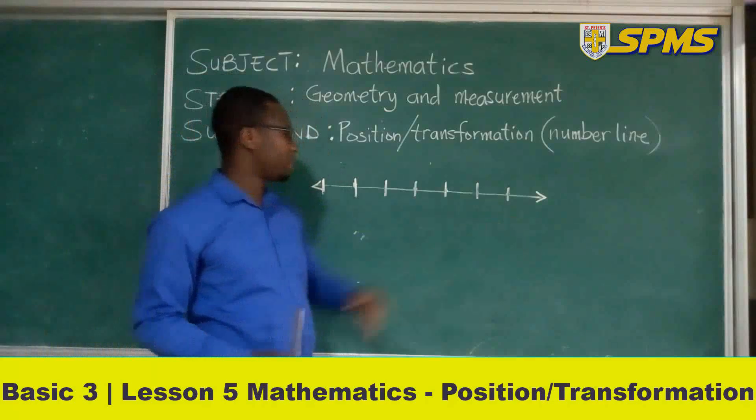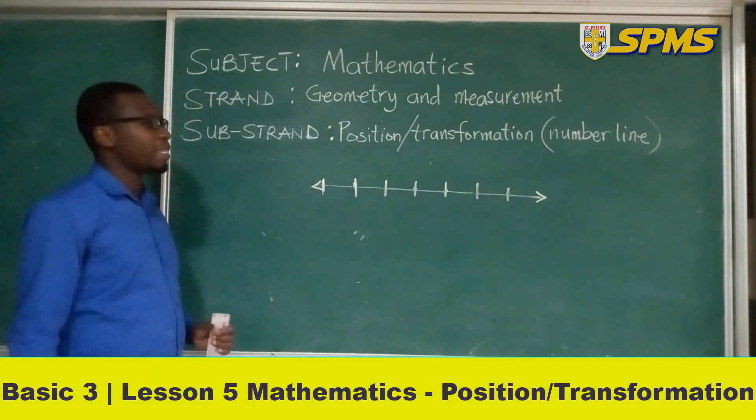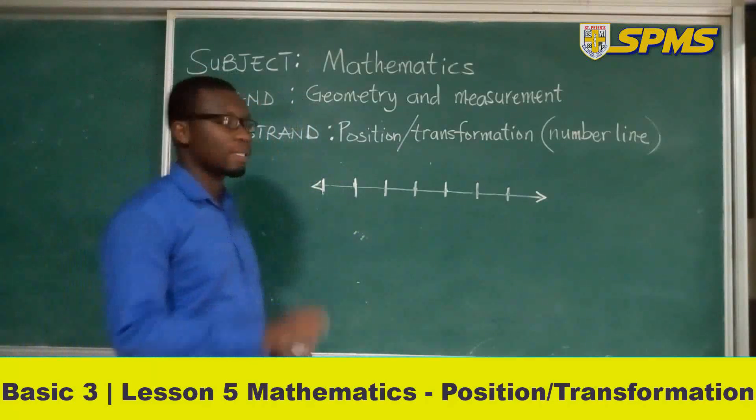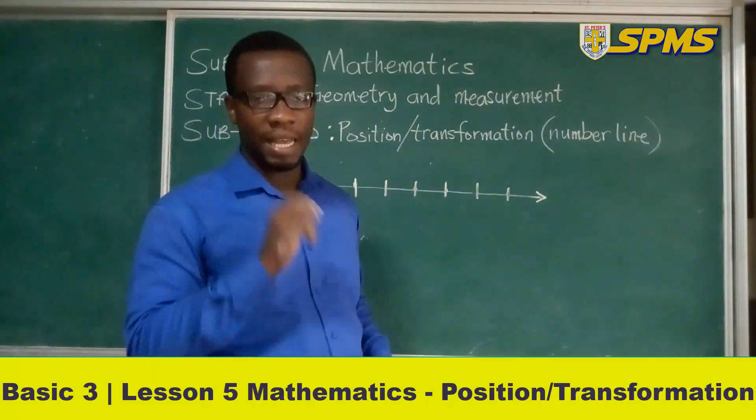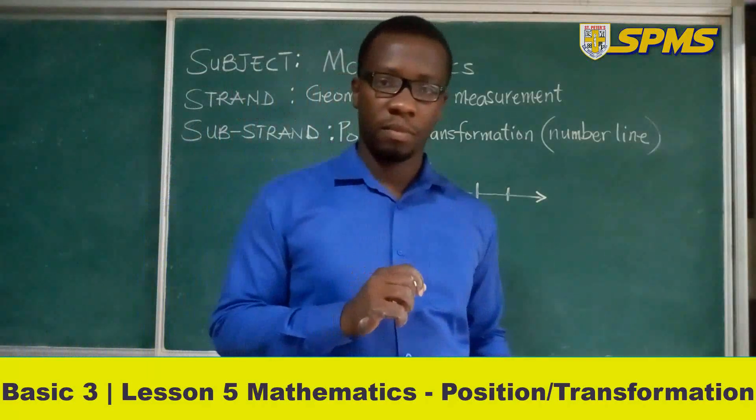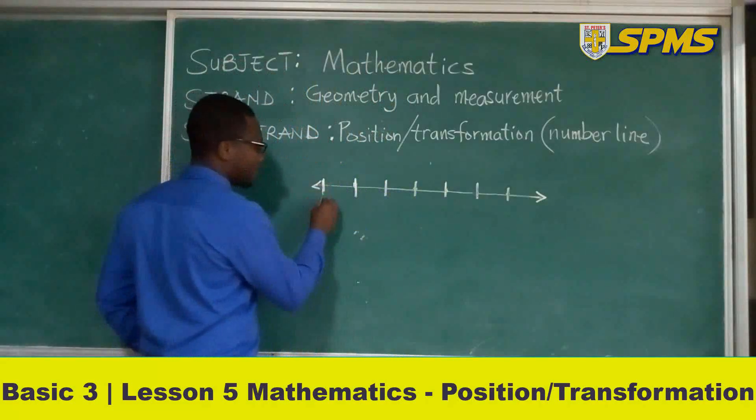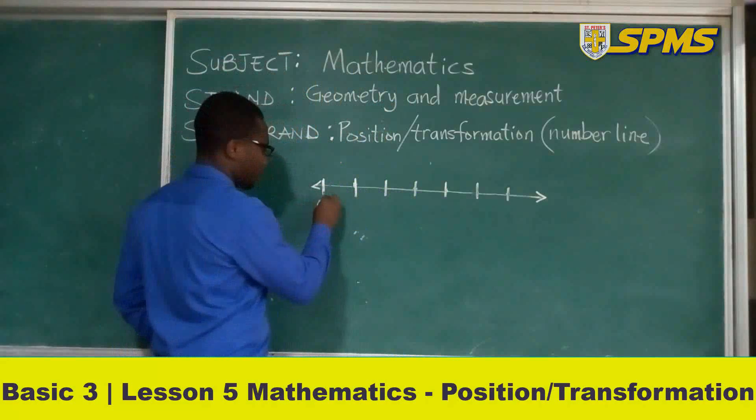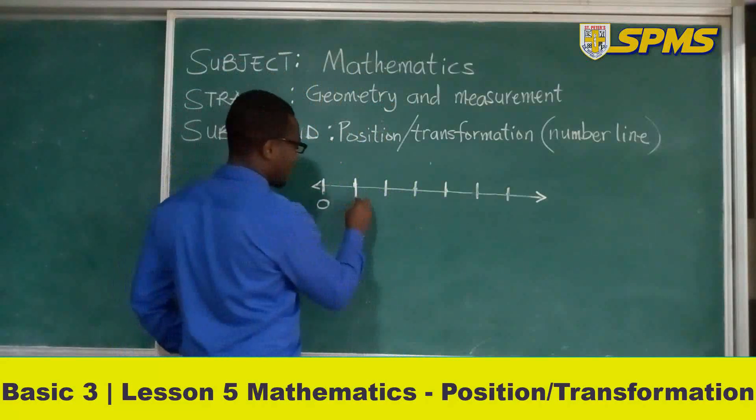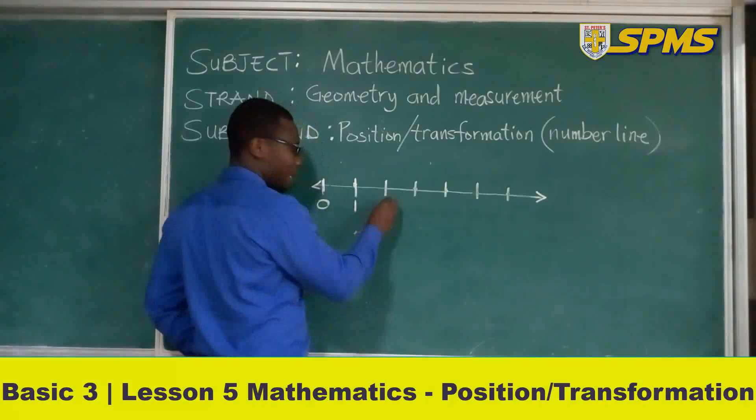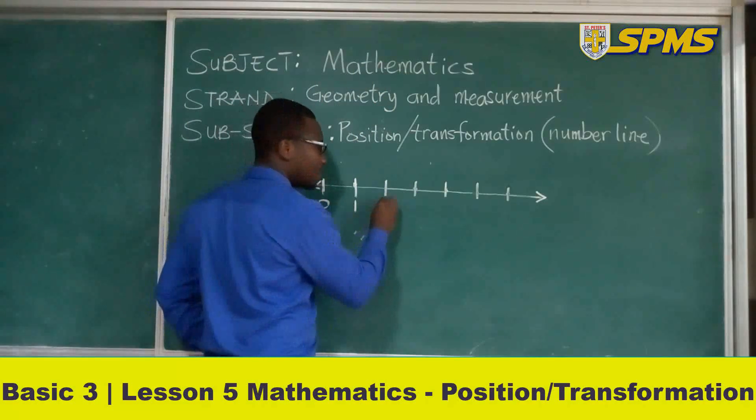Now we are going to represent each tick mark with a number. So we represent the first tick mark with a zero at the bottom. Next one, you have one. Next one, what do you think? Two.